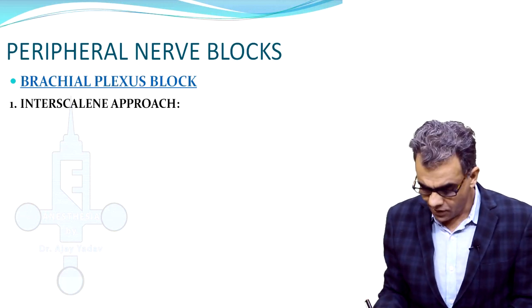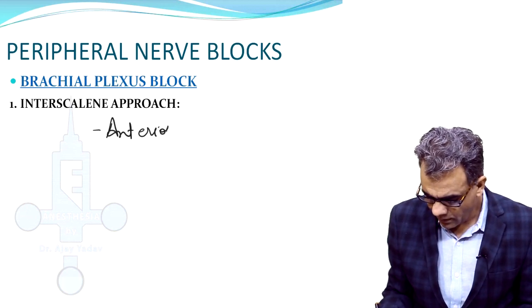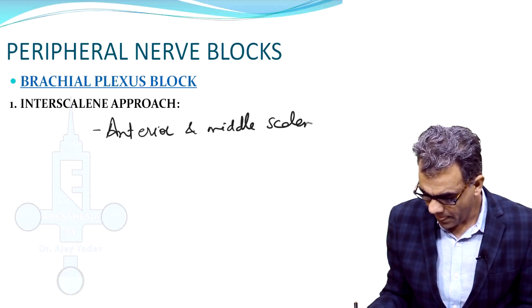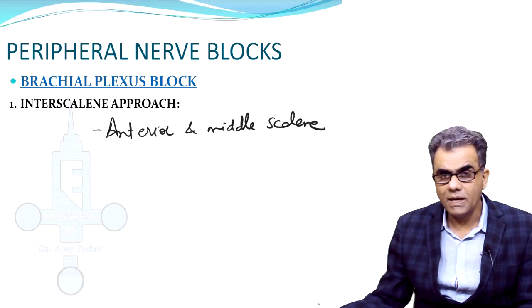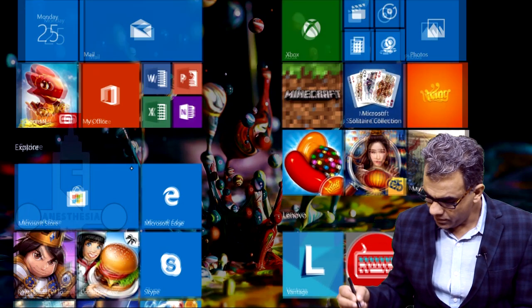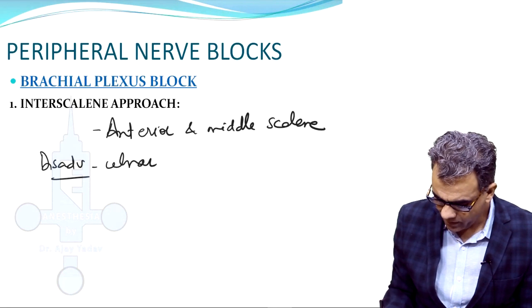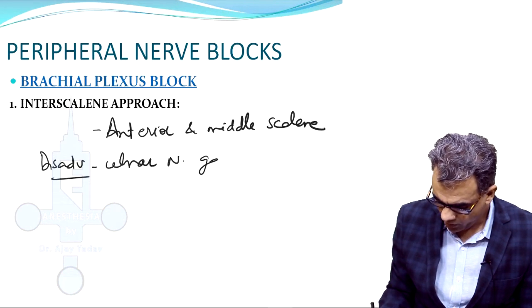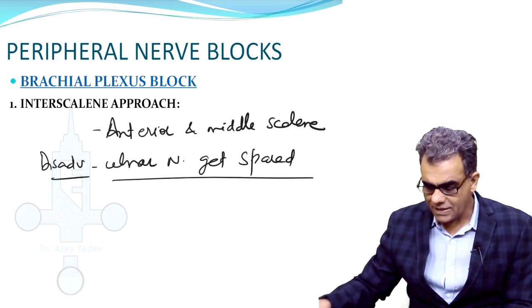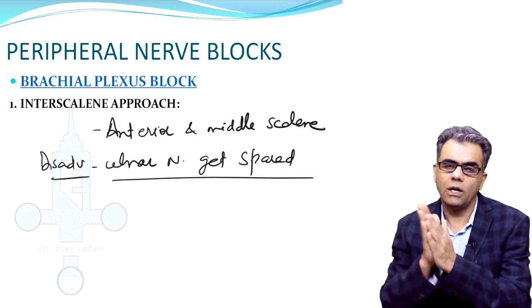Interscalene approach the block is given between anterior and middle scalene. The major disadvantage or limitation of this block is that ulnar nerve gets spared. Interscalene approach cannot be utilized for hand because nerve supply of hand is mainly through the ulnar nerve.